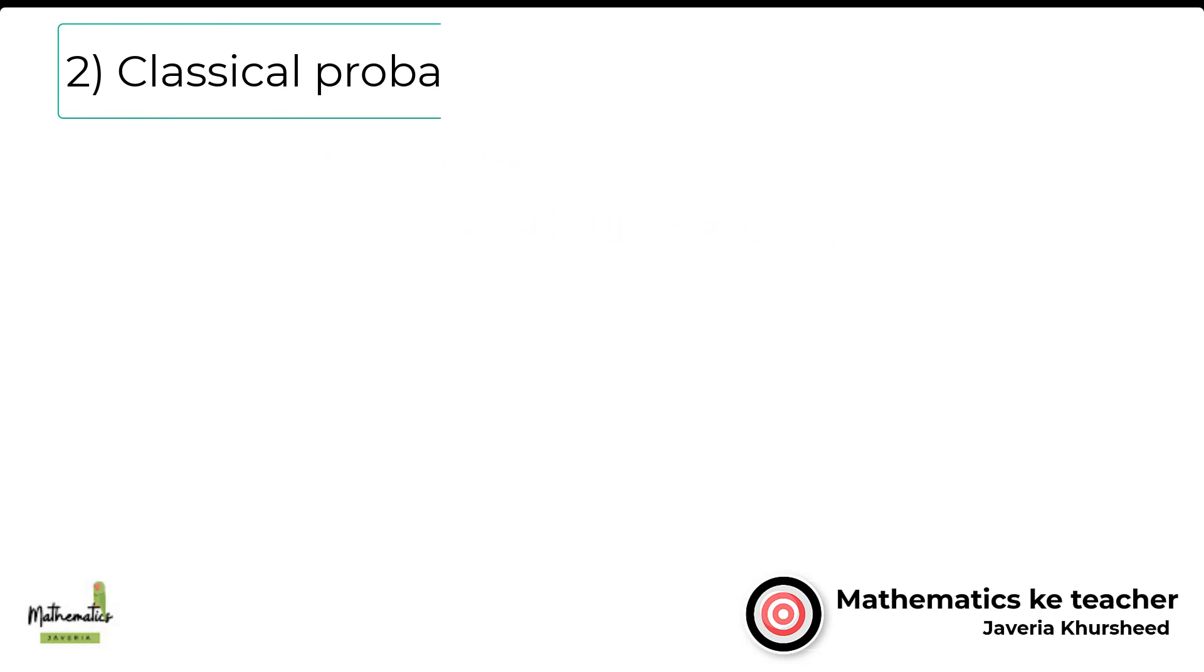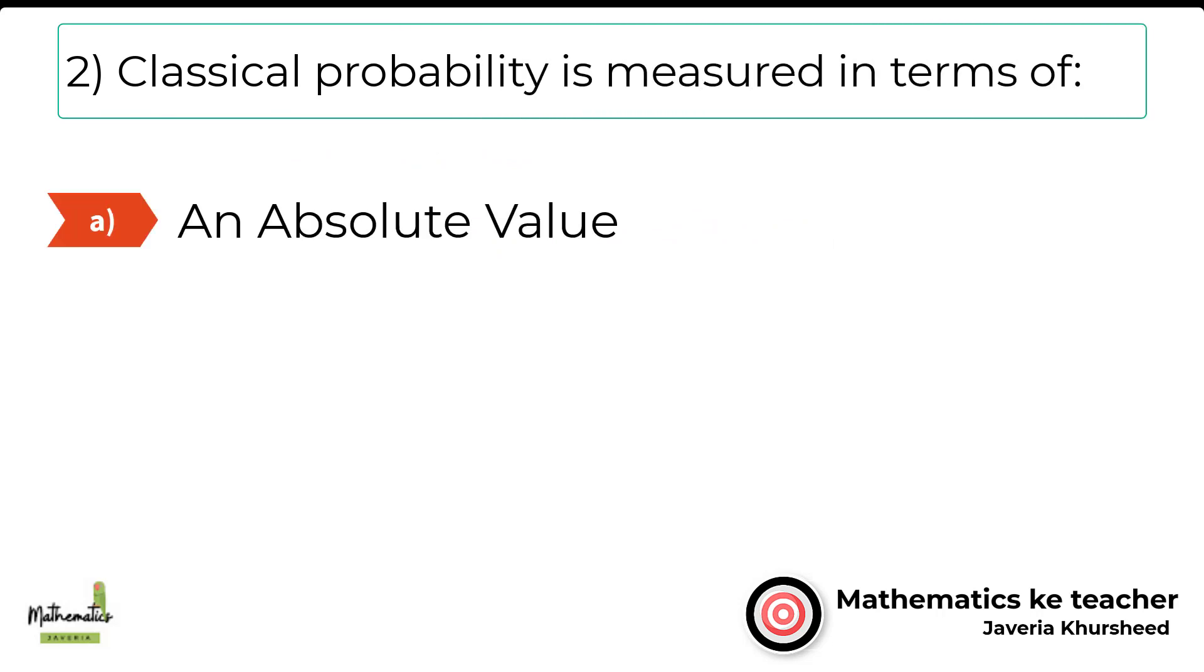Number 2. Classical probability is measured in terms of: A. An absolute value. B. A ratio. C. Percentage. D. Both A and B.